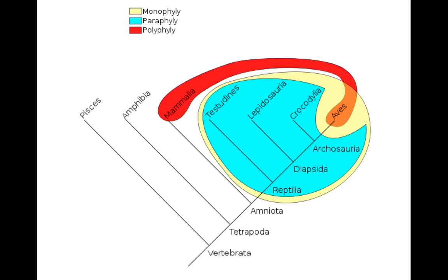There's also an example of polyphyly here, represented in the red-orange shape — a characteristic that has evolved in multiple lineages. In this case, mammals and birds share something in common: we're both warm-blooded, both homeothermic. We're not poikilothermic, or cold-blooded, as are turtles and snakes and alligators. This is something that evolved in two different lineages — it evolved many times — so we say it's polyphyletic, or it's an example of polyphyly.